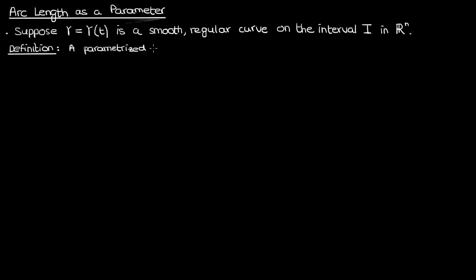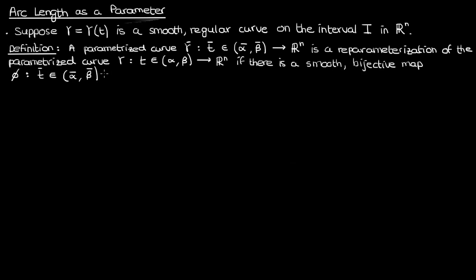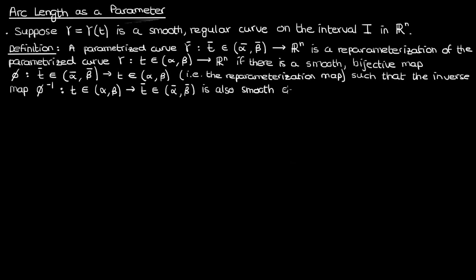This definition states that a parametrized curve γ̄ with parameter t̄ is a reparametrization of γ(t) if there is a smooth bijective or one-to-one map φ which converts t̄ to t such that the inverse map φ^(-1) which converts t to t̄ is also smooth and γ̄ can be expressed as γ∘φ(t̄) for all t̄ in the open interval between ᾱ and β̄.